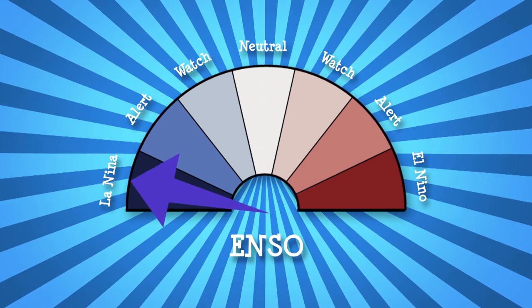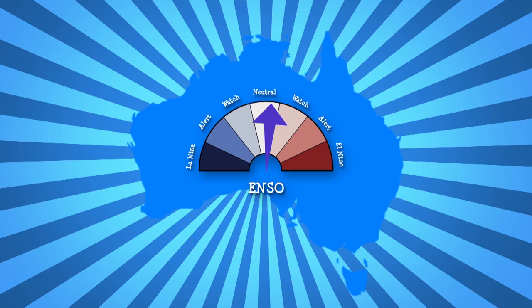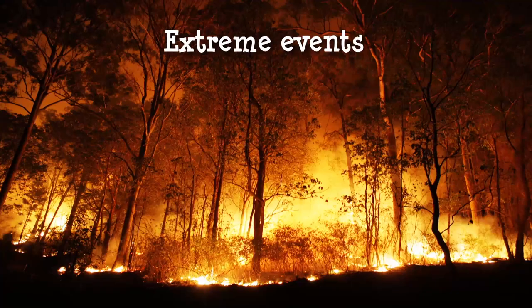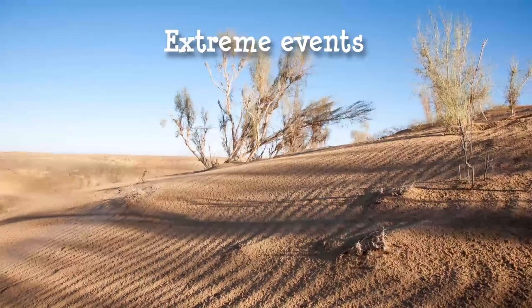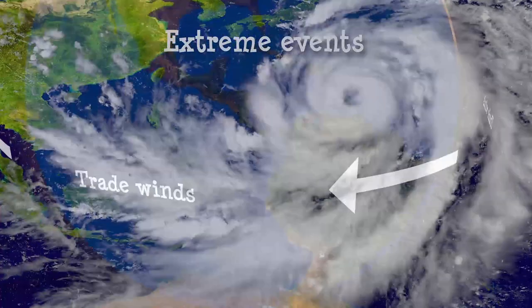ENSO is a major influence on Australia's climate. El Niño and La Niña events can cause natural extreme events such as bushfires, drought, heatwaves, floods, and cyclones.